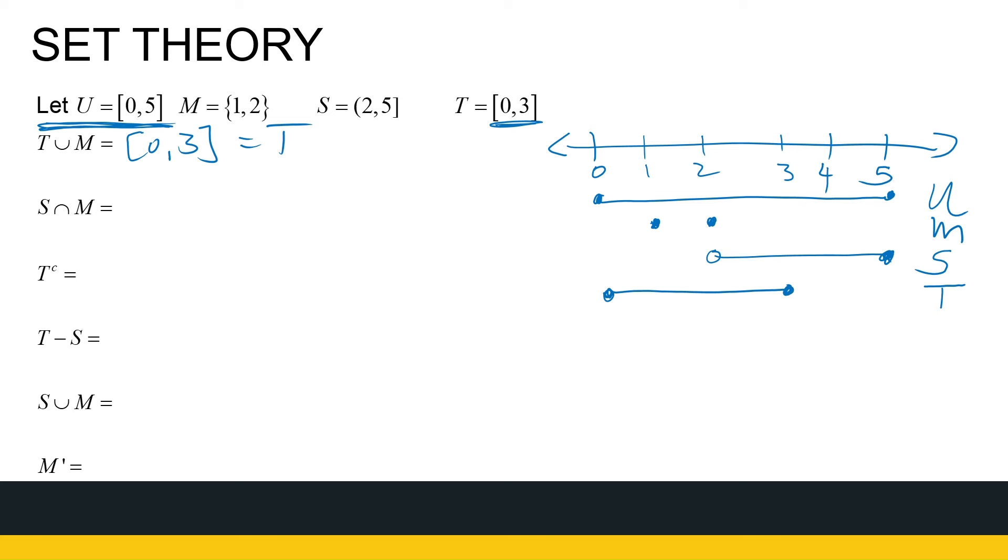What about S intersection M? Okay. What does S and M have in common? Well, one is in M. It's not in S. Two is in M. It's not in S. They've got nothing overlapping. They've got nothing in common. Empty set. That's my answer. They've got nothing in common.